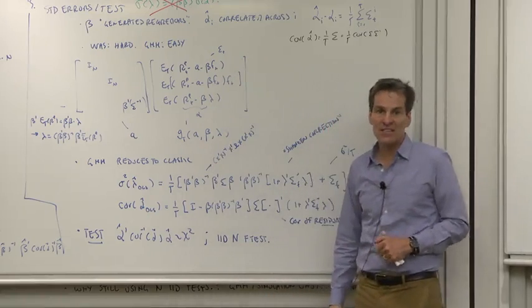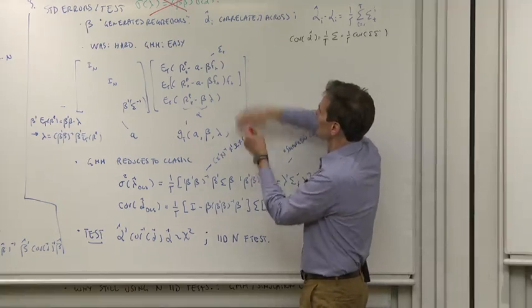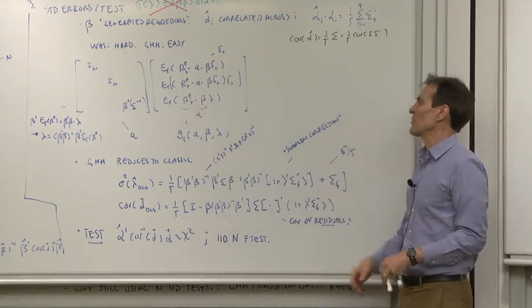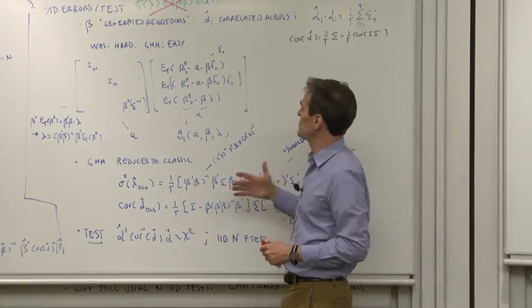How do you do problems like that? You just stack up all the moment conditions in one big thing and let the S matrix handle the correlations, if the beta is estimated in one equation with their use as a right-hand variable in another. So I wrote down the GMM we're going to use for this.